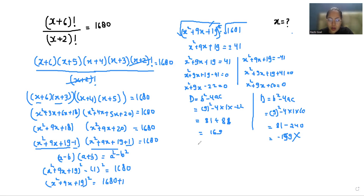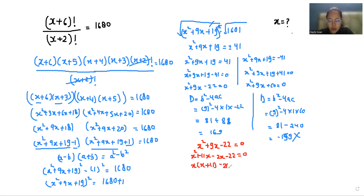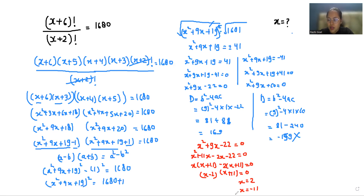Solving x squared plus 9x minus 22 equals 0 by middle term splitting: x squared plus 11x minus 2x minus 22 equals 0, giving x times x plus 11 minus 2 times x plus 11 equals 0. Therefore x minus 2 times x plus 11 equals 0, so x equals 2 or x equals negative 11.